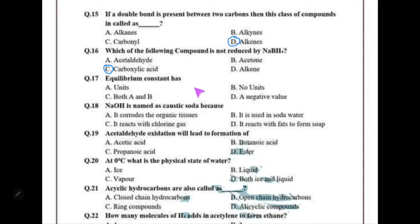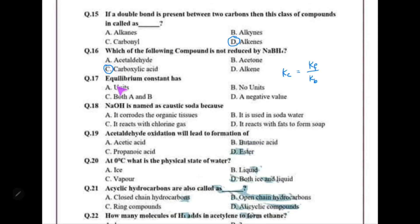Does the equilibrium constant have units? The equilibrium constant Kc can have units or no units. It is the constant for the forward reaction divided by the constant for the backward reaction. The units of the two may cancel each other or may not cancel, meaning the equilibrium constant may or may not have units.